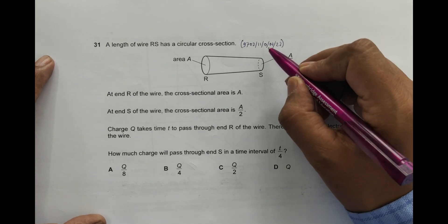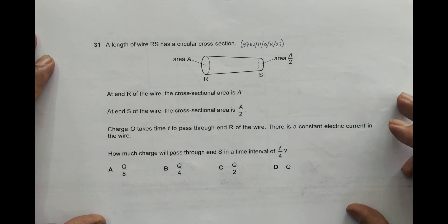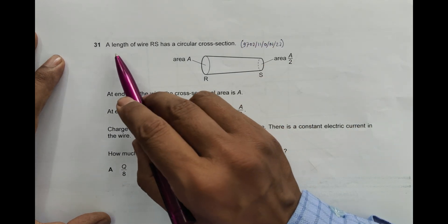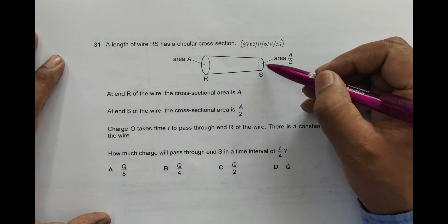Hello folks, this is 2022 October-November paper 11 and the question number is 31. This is concerned with the chapter current electricity. It says a length of wire RS has a circular cross section.